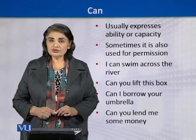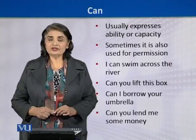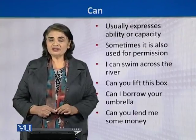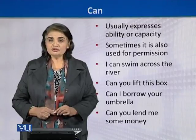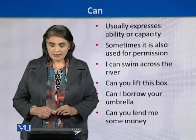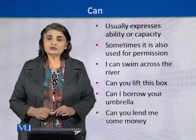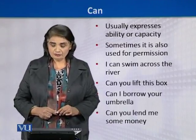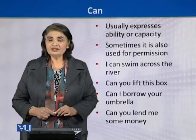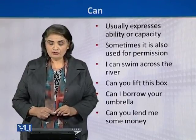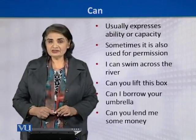In the next sentence, it is totally a form of permission: 'Can I borrow your umbrella?' Here there is no sign of ability or capacity — it is simply asking permission to use the umbrella. Similarly, 'Can you lend me some money?' is an expression of asking permission.